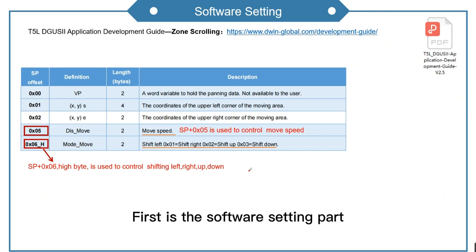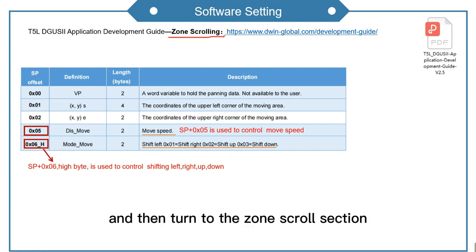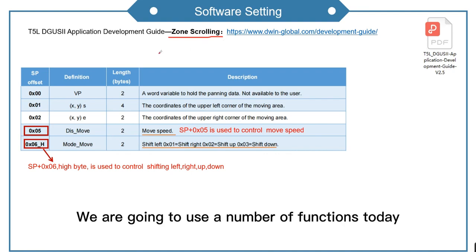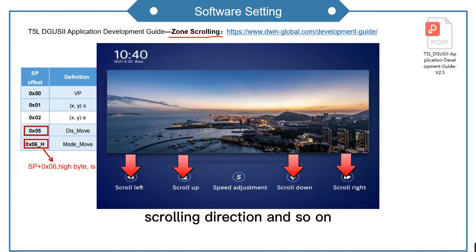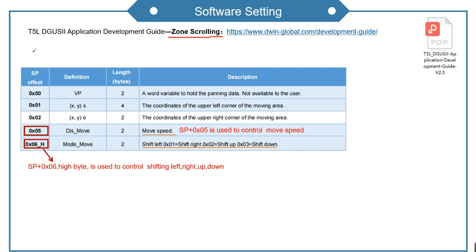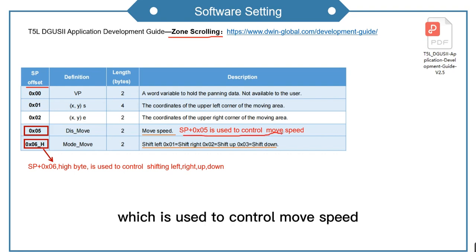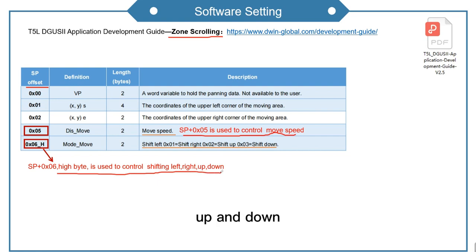First is the software setting part. We need to open the T5L DGUS 2 application development guide and turn to the zone scroll section. We are going to use a number of functions today — about speed adjustment, scrolling direction, and so on — so we need to use SP to control zone scrolling. This is the offset of SP: 05 indicates SP plus 05, which is used to control move speed. 06H indicates SP plus 06, and the high byte is used to control shifting left, right, up, and down.